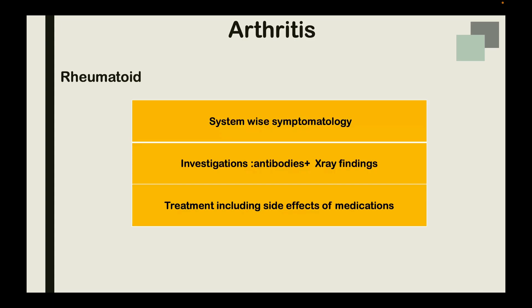To begin with, the first topic is arthritis. Rheumatoid arthritis is the most important topic and you have to read everything, each word, from a standard textbook or standard MRCP notes. As the exam is getting tougher, expect questions on Caplan syndrome, specific manifestations of the respiratory system, cardiology, neurology — that is the extra-articular manifestations of rheumatoid arthritis.